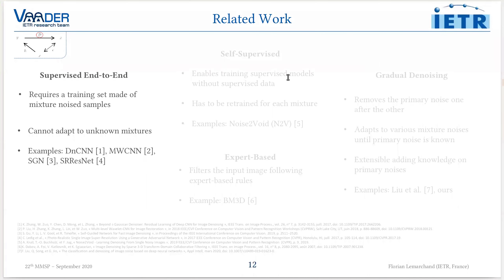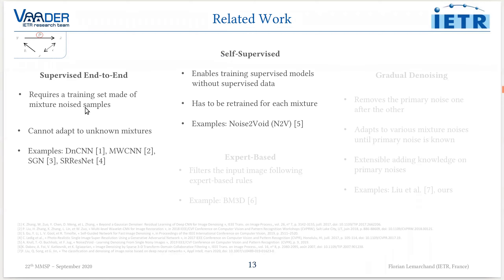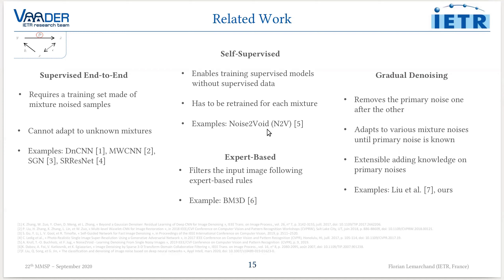Most denoising techniques are made for primary noise; however, they can be used for mixture noise removal. The current state of the art for denoising is supervised deep learning. The major drawback is that these techniques must be trained on supervised datasets for each mixture, meaning they cannot adapt to unknown mixtures. Another possibility is self-supervised learning, which enables training without paired data, but it also has to be retrained for each mixture. A further option is expert-based denoising, which filters the input image following expert rules. Our proposal is to use gradual denoising that removes primary noise one after the other, and can adapt to various mixture noises as long as the primary noises are known.